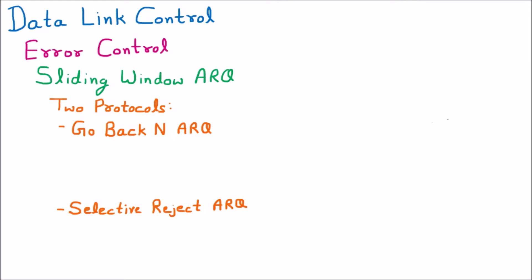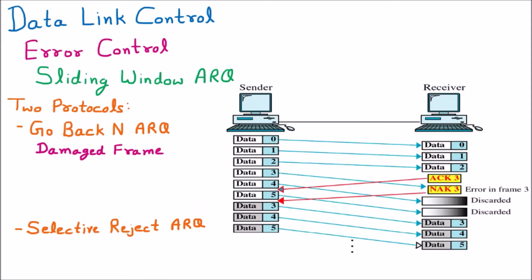To understand these protocols more, we first look at Go Back N ARQ for damaged frames. We have a diagram here discussing Go Back N ARQ with a damaged frame. Let us suppose we are having a sender and a receiver, and these two are connected with a line, with the sender sending data to the receiver.